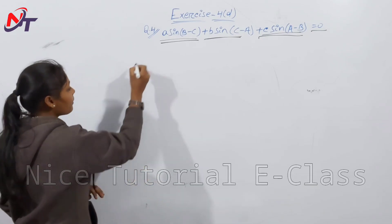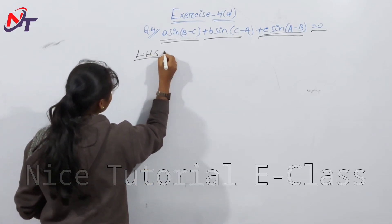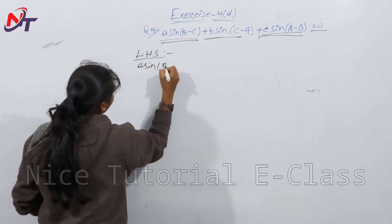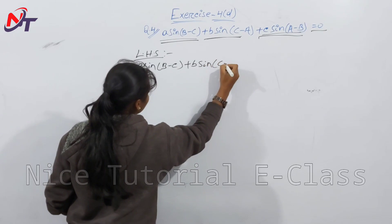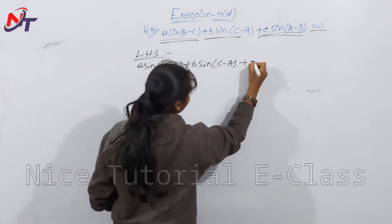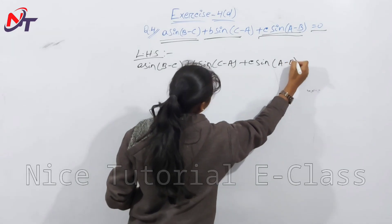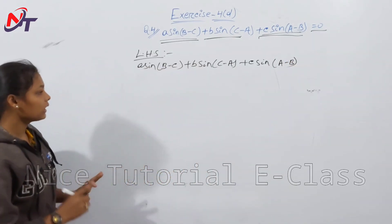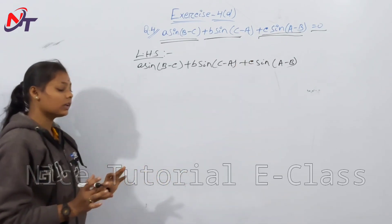We look at the left-hand side: A sin(B − C) + B sin(C − A) + C sin(A − B). Here, small a, small b, small c are the sides of the triangle.